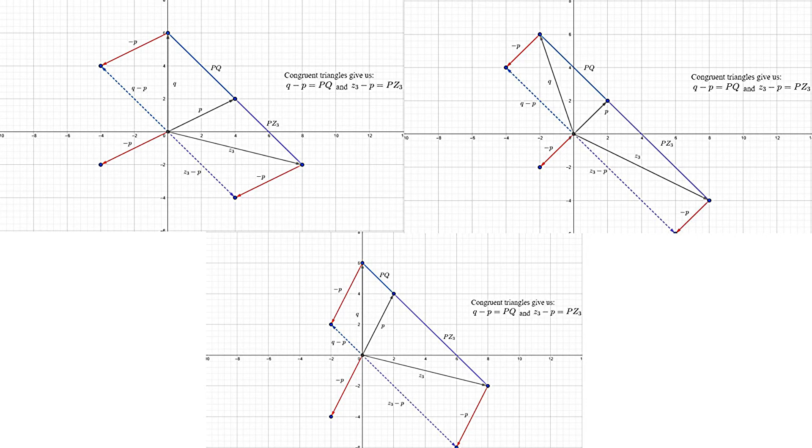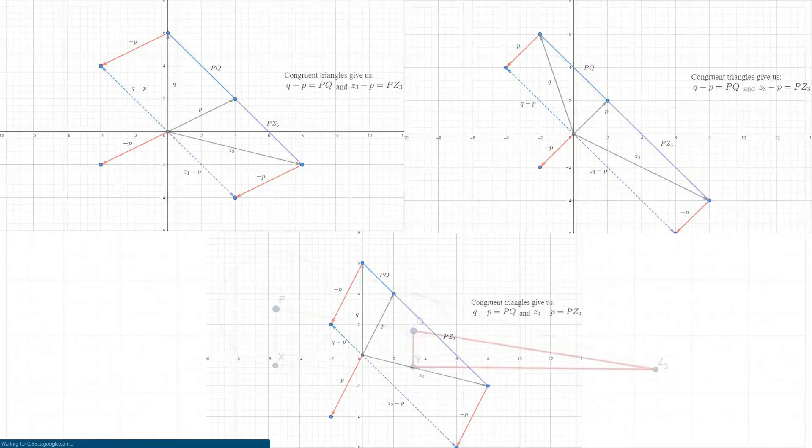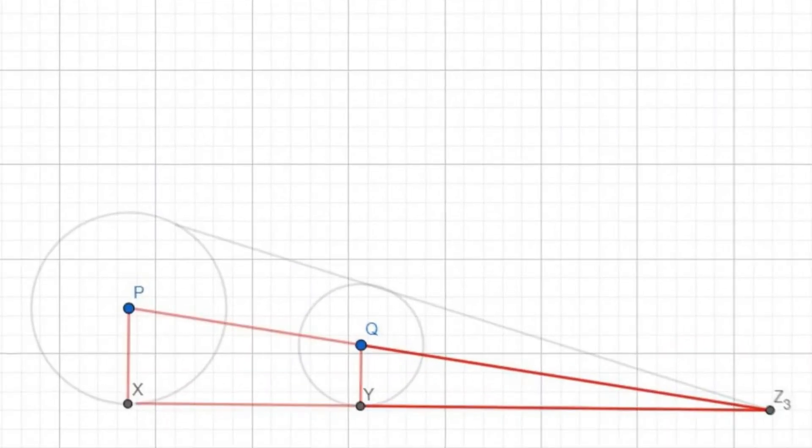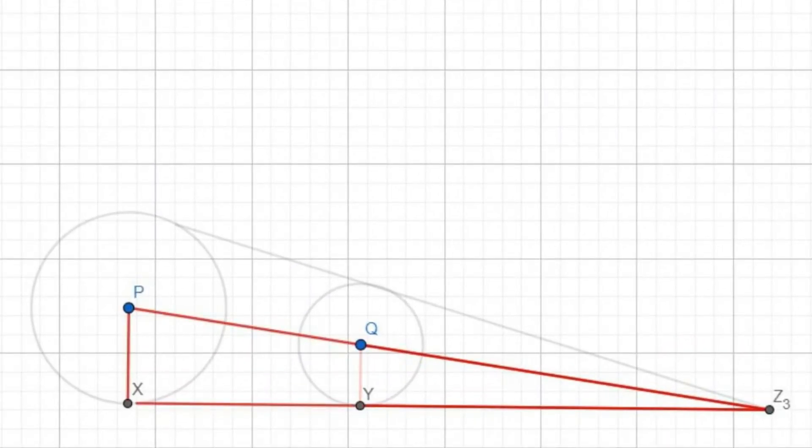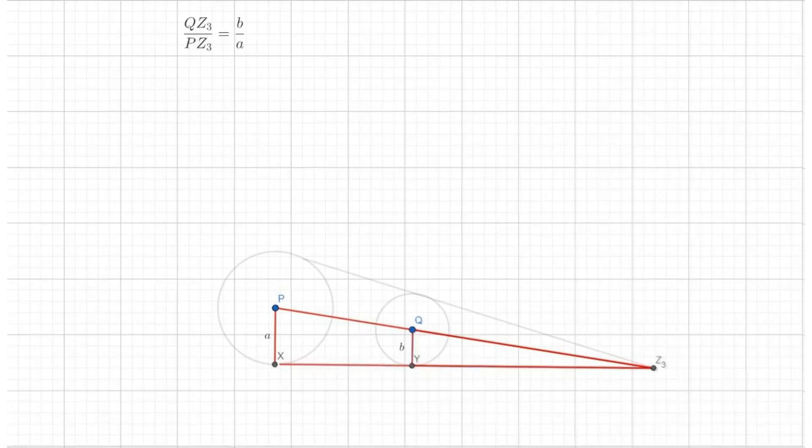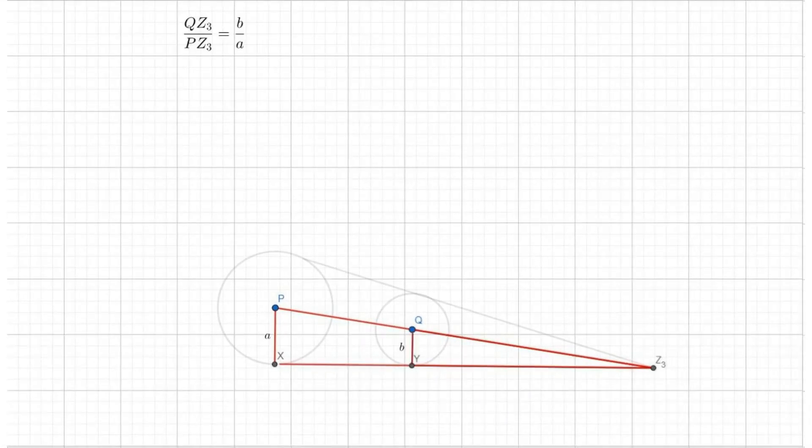Focusing back to our diagram, we have similar triangles QZ3Y and PZ3X. This gives us the ratio of sides QZ3 over PZ3 as B over A.